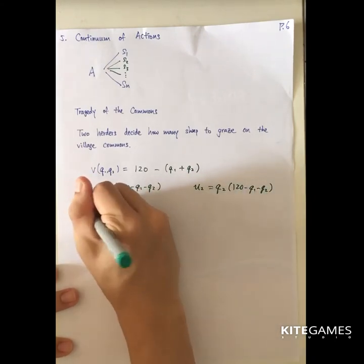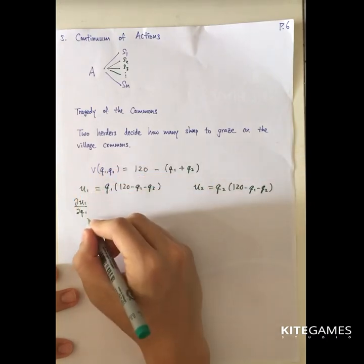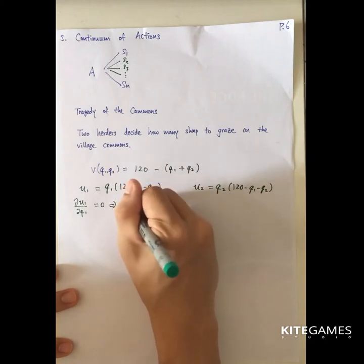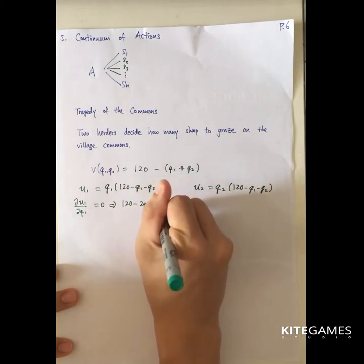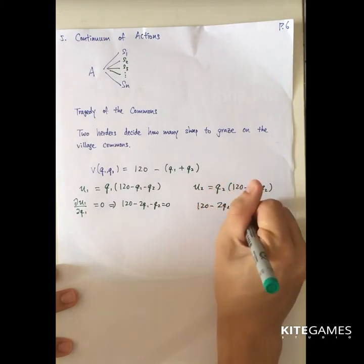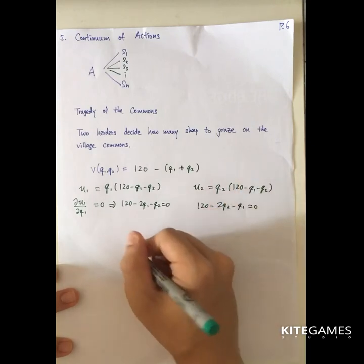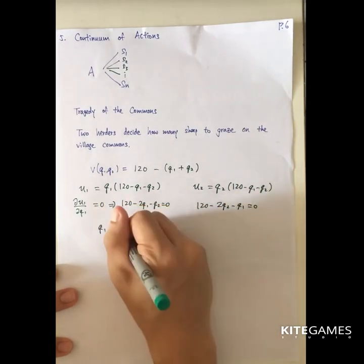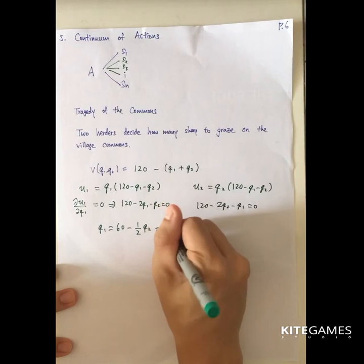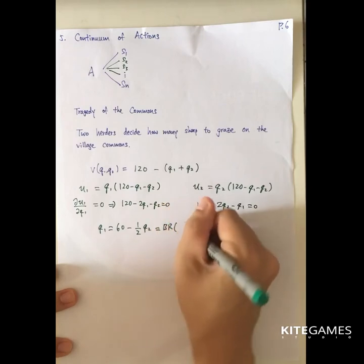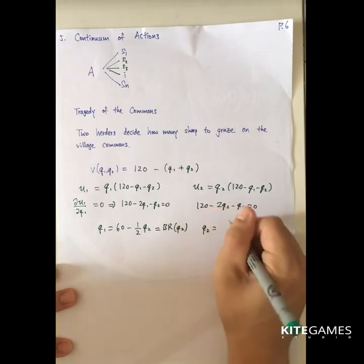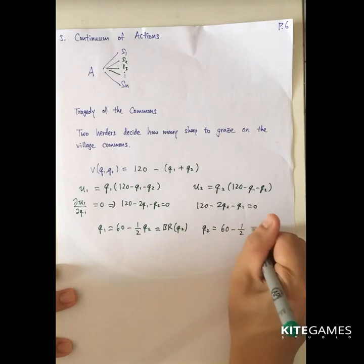If they act in their own interest, they will maximize utility by selecting their number of sheep. Setting the first-order condition to zero gives: 120 minus 2k1 minus k2 = 0 for herder one, and 120 minus 2k2 minus k1 = 0 for herder two. So k1 = 60 minus one-half k2 — this is the best response of herder one given the other party's action. And the best response for herder two is k2 = 60 minus one-half k1.